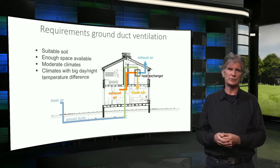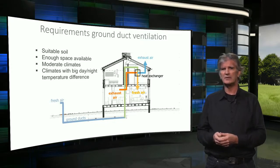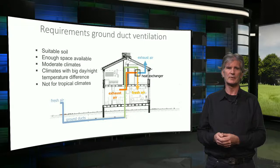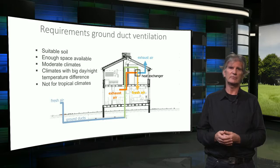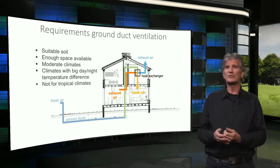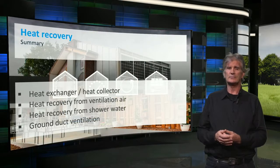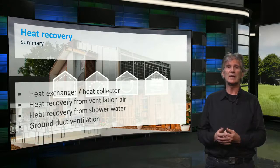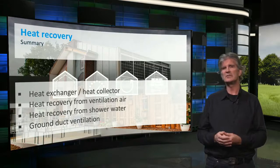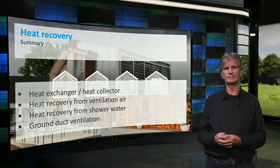Furthermore, the climate must be suitable. In a moderate climate, with cold winters and warm summers, it is most effective. It also works in climates with a big temperature difference between day and night. But in a tropical climate, with a high average outer temperature, it is not effective, because the temperature difference between the air and the soil is too small. To summarize, in this lecture you have seen different ways to regain and reuse heat in buildings. Depending on your local climate, one or more of these technologies might be applicable in the zero energy design of your building.